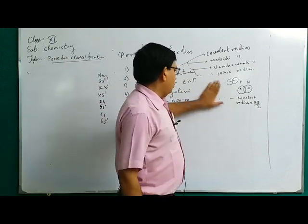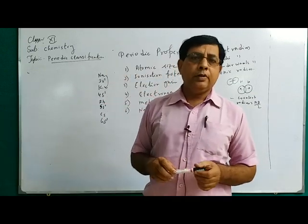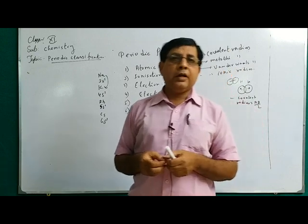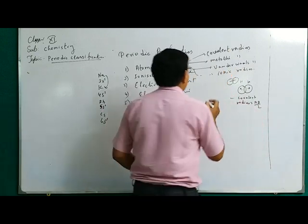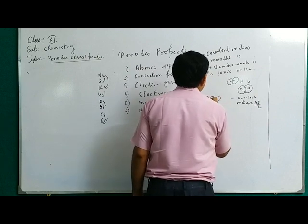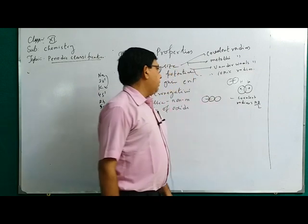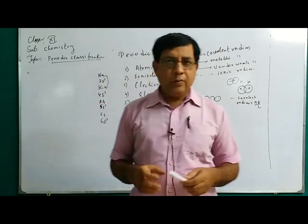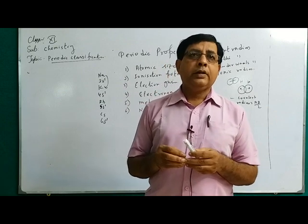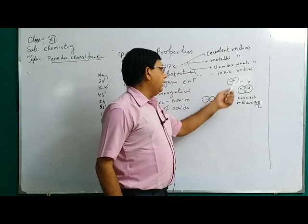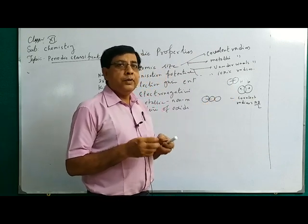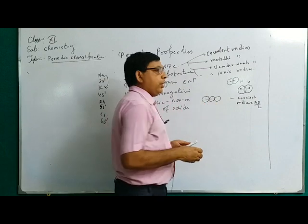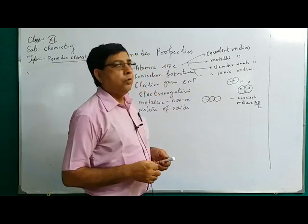What is metallic radius? In a metal, there are a large number of positive metal ions — called kernels — in a sea of electrons. The metallic bond is due to the electrostatic force between the positive-charge kernels and the sea of electrons. In metallic bonding, metal atoms are present side by side. Half of the internuclear distance between two neighboring atoms in a metallic crystal divided by two is called metallic radius. Because atoms in a metal do not overlap as in covalent bonding, covalent radius is smaller than metallic radius.